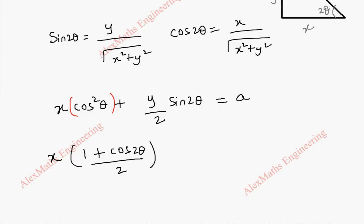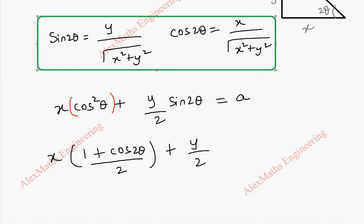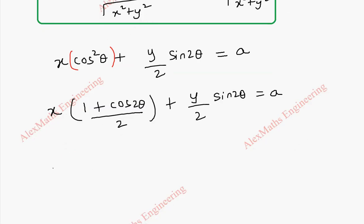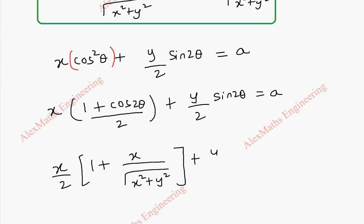Then it is possible to replace sin2θ and cos2θ from what we obtained. I converted the expression in terms of sin2θ and cos2θ and I am going to replace them. So 1 + cos2θ becomes 1 + x/√(x²+y²). Here x/2 is there and we have 1 + x/√(x²+y²), and here it is y/2 and this is y/√(x²+y²) equal to a. So we have replaced them.